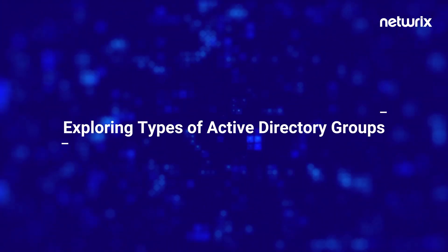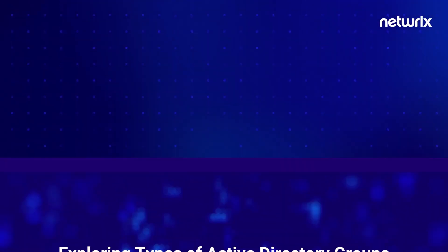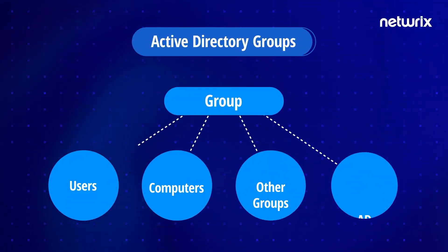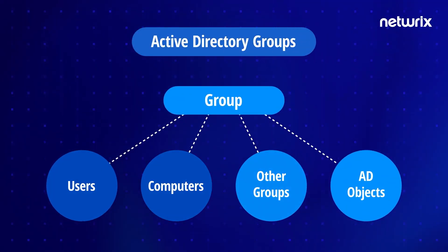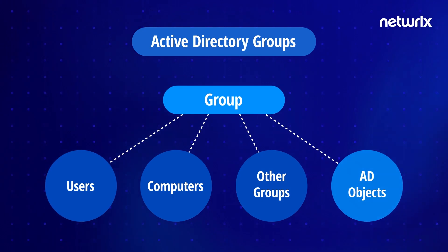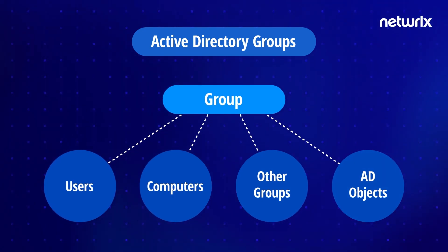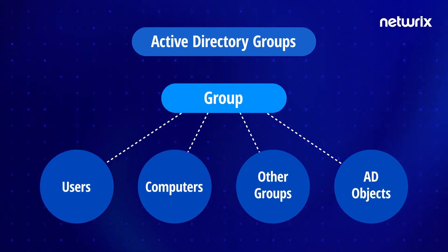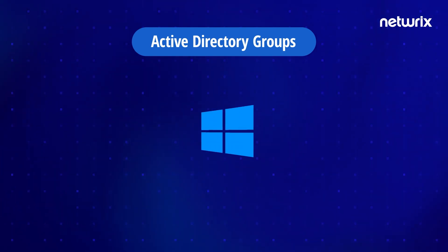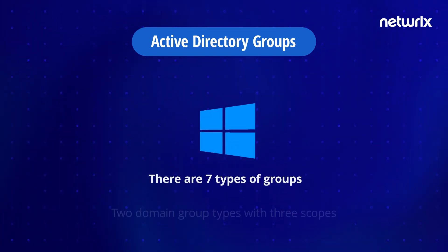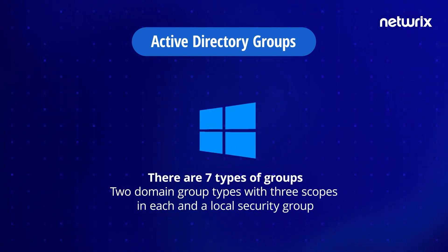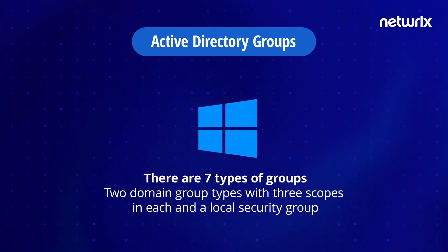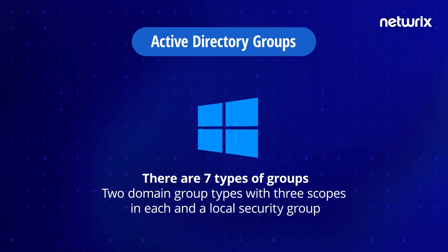Active Directory groups are a collection of Active Directory objects. The group can include users, computers, other groups, and other AD objects, and the administrator manages the group as a single object. In Windows there are seven types of groups: two domain group types with three scopes each, and a local security group.